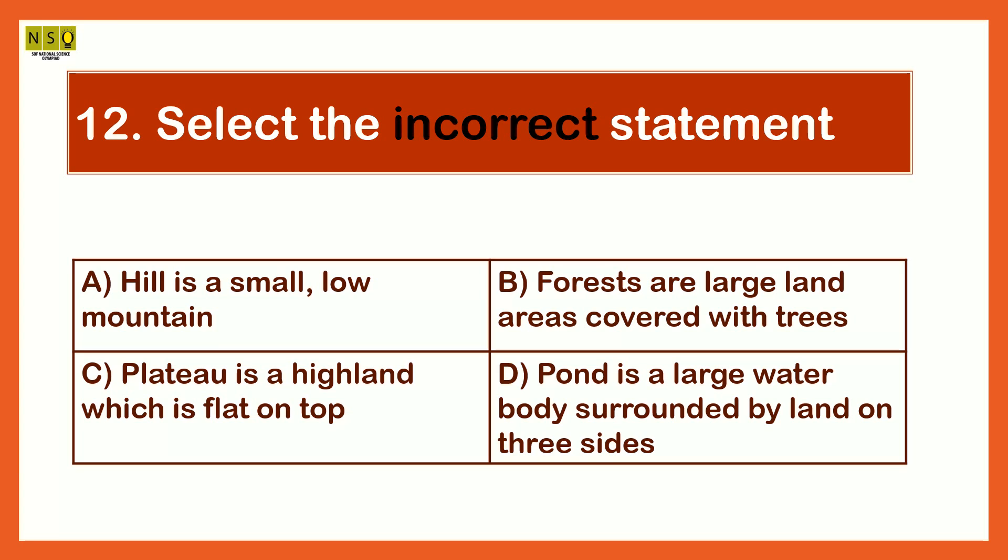The incorrect statement is Option D. Pond is a large water body surrounded by land on three sides. That is incorrect. Pond is a small water body.